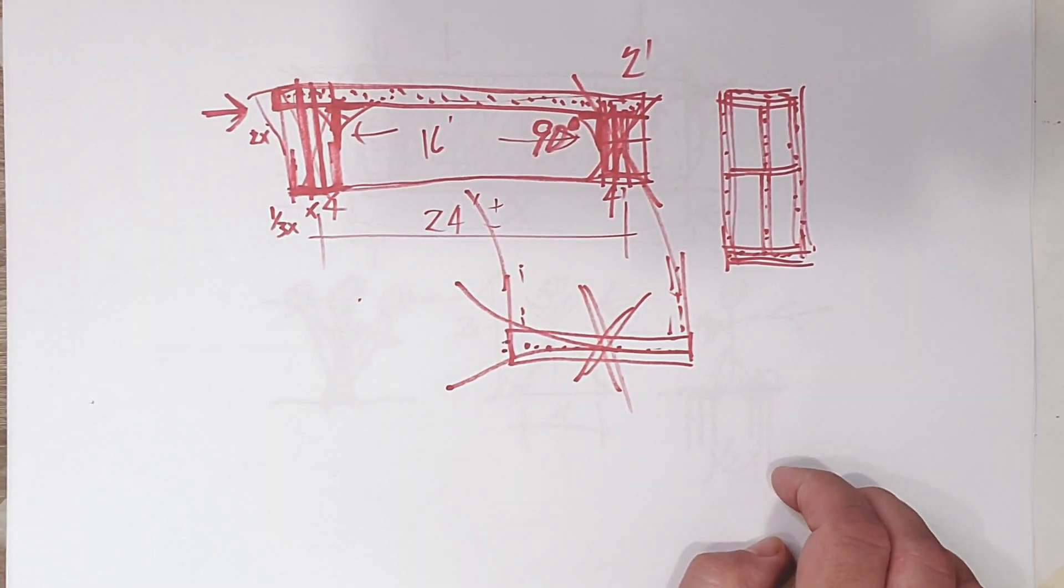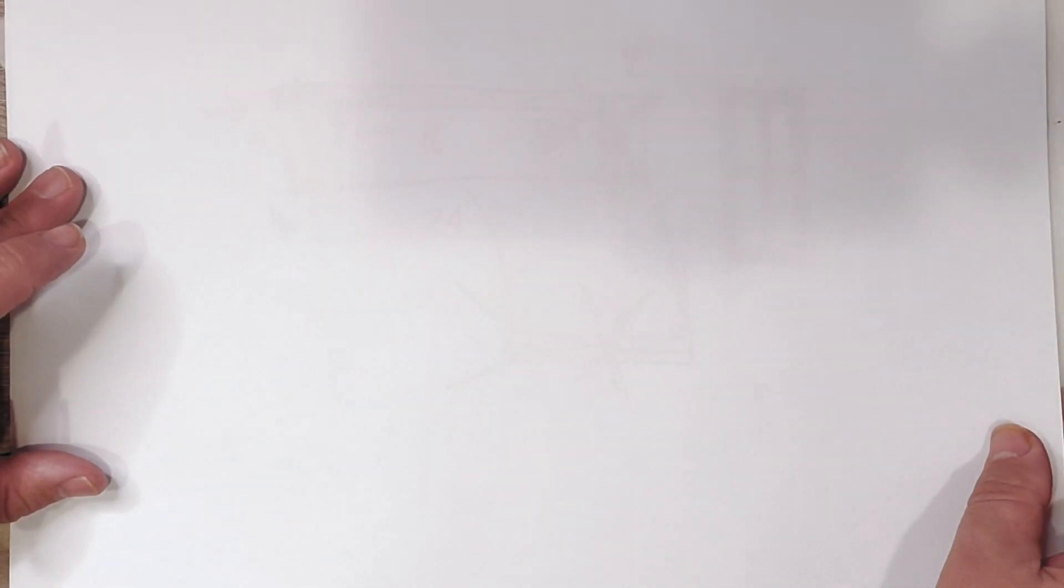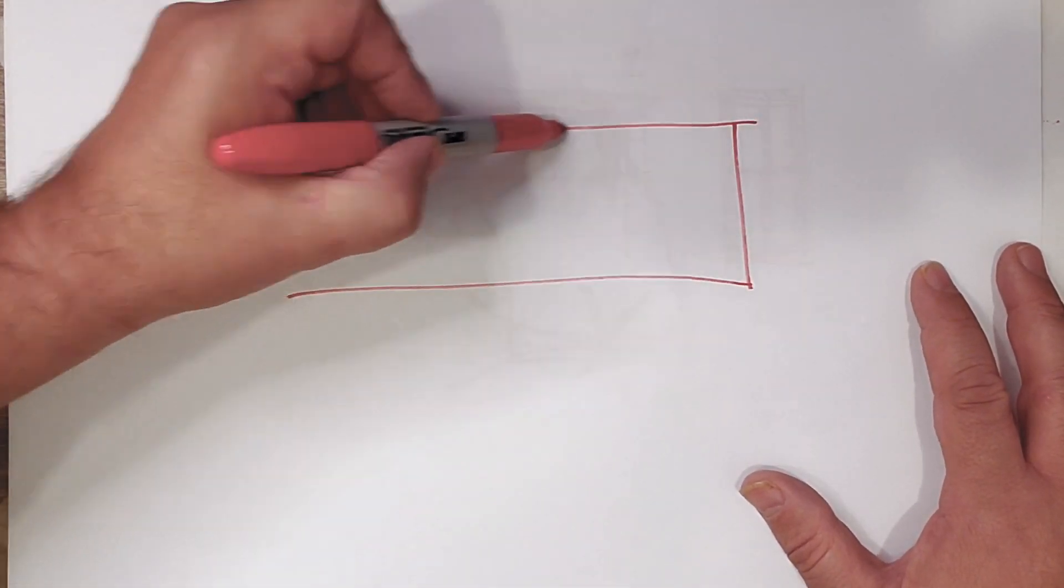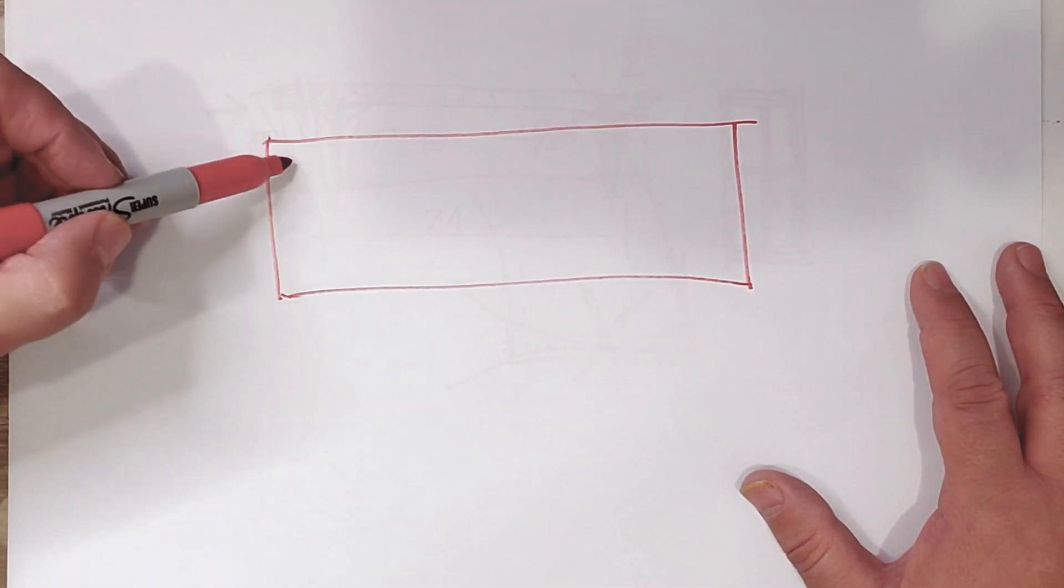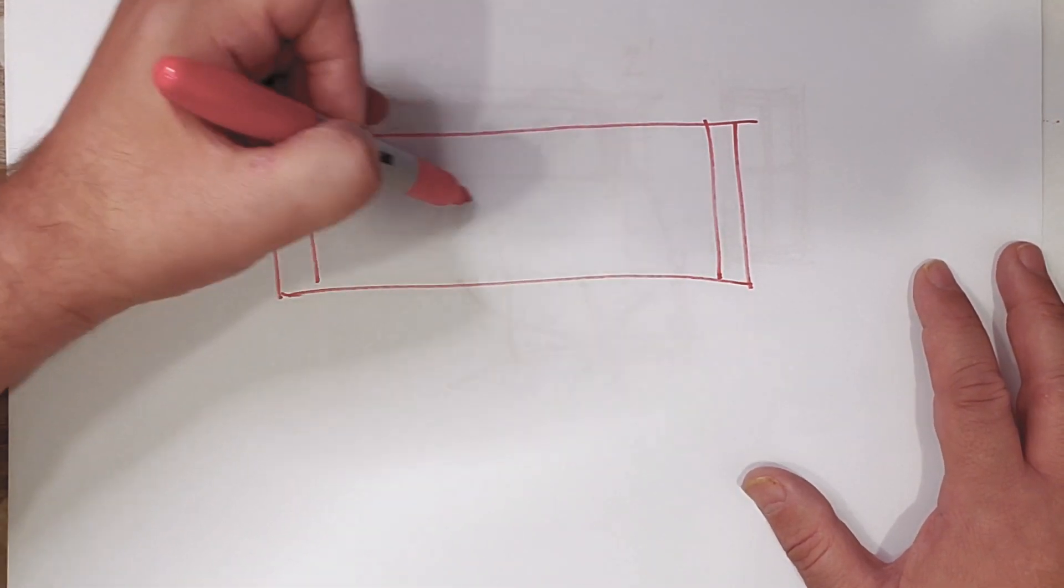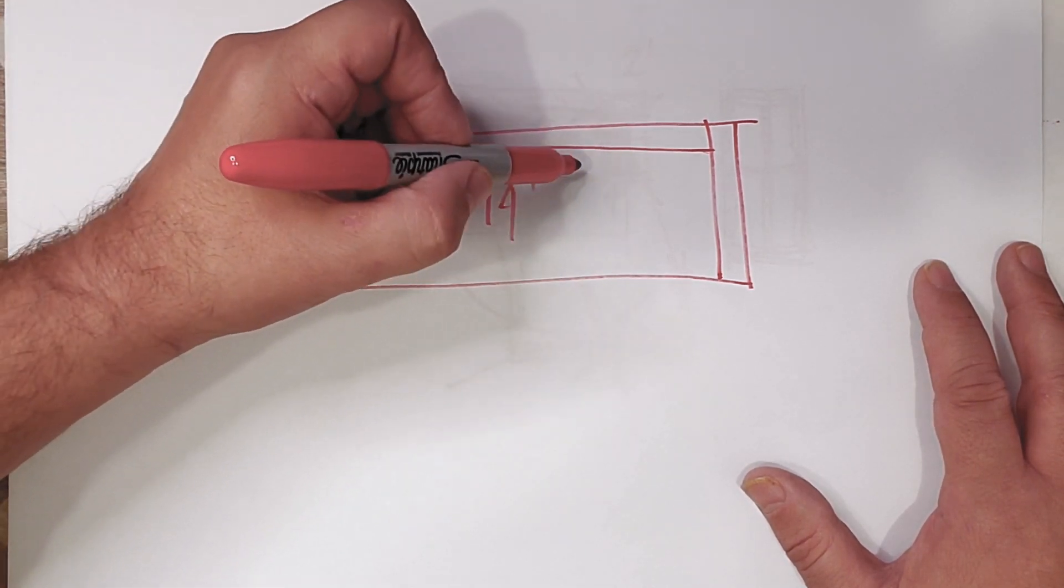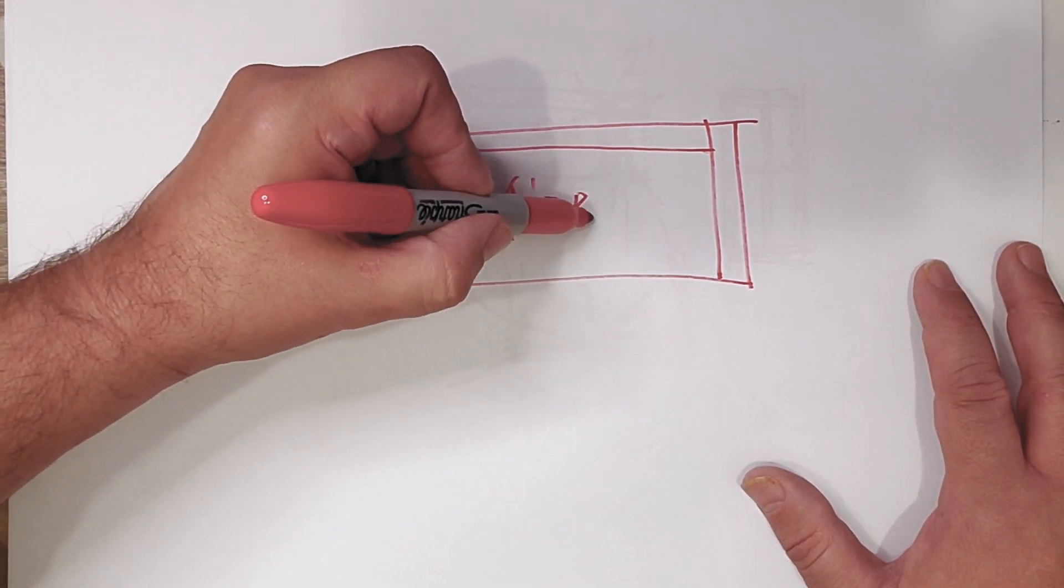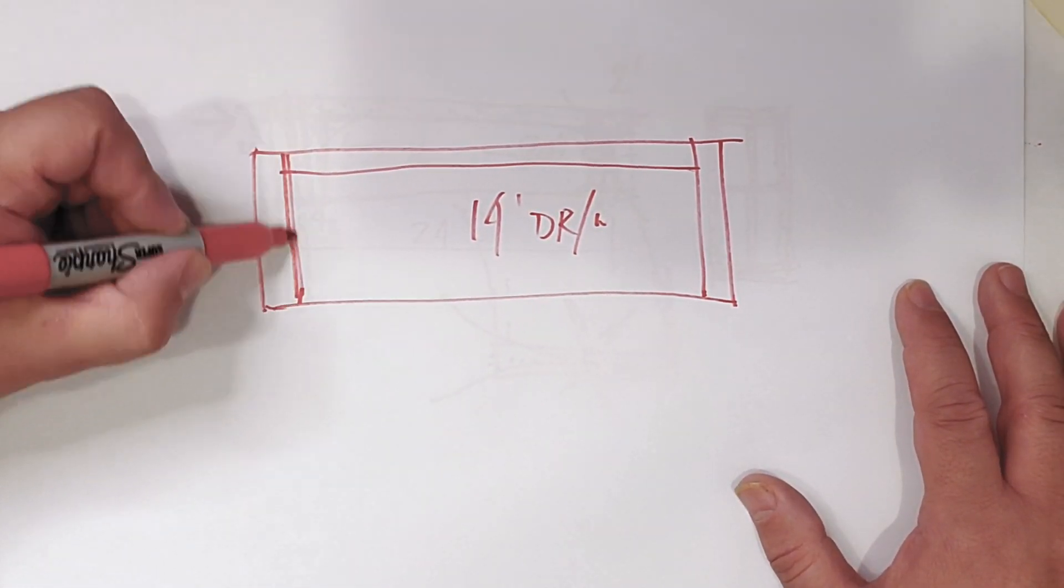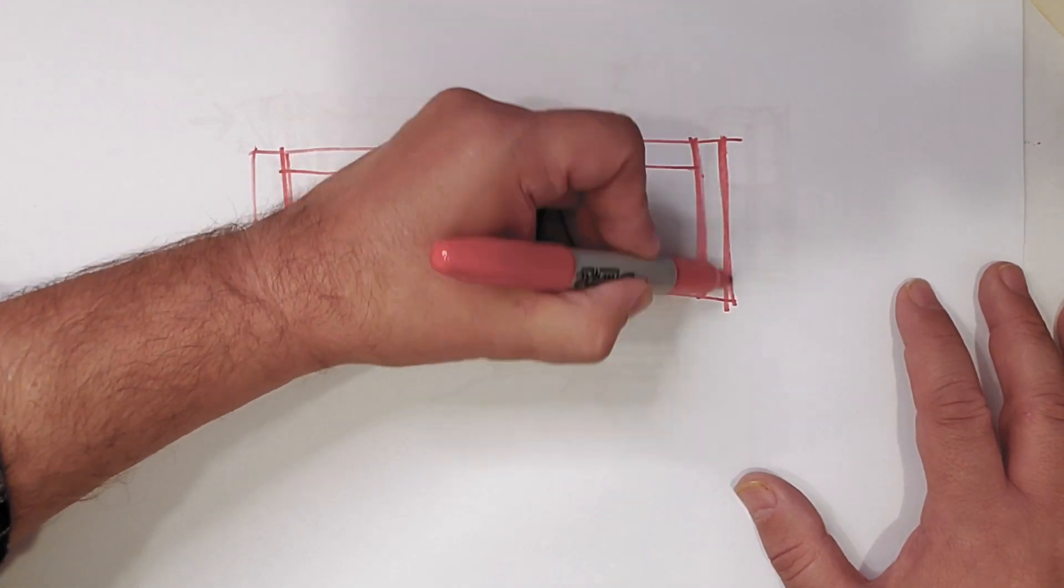At some point, when this panel starts getting down in the two-foot range, this is starting to not work. And if you remember on the house at the Hilltop Arrow, we had an 18-foot wall and we had two-foot legs on each side and a header in there with a 14-foot door, window, slider.